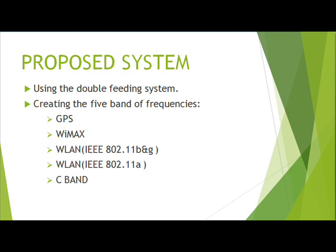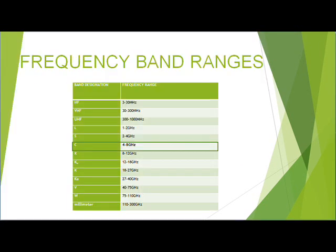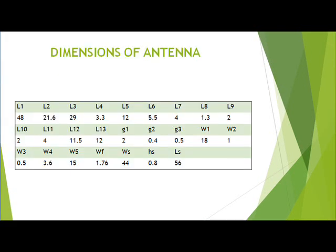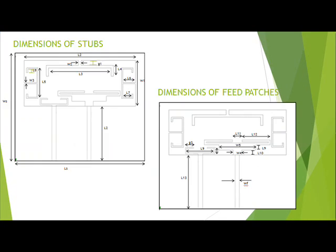The main parameter of our slot is in the area of 48 x 18 mm square. The rectangular slot is loaded with an inverted T-stub, two E-shaped stubs, and two E-shaped feed patches. The feeding uses a coaxial cable where the outer conductor is connected to the ground plane and the center conductor is connected to the feed patch of our antenna.